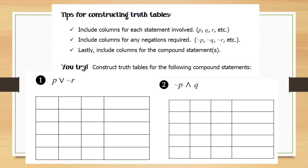Now let's apply this. For example one, we have the statement p or not r. The two variables are p and r. The possible truth value combinations for p and r are: true and true, true and false, false and true, or false and false.